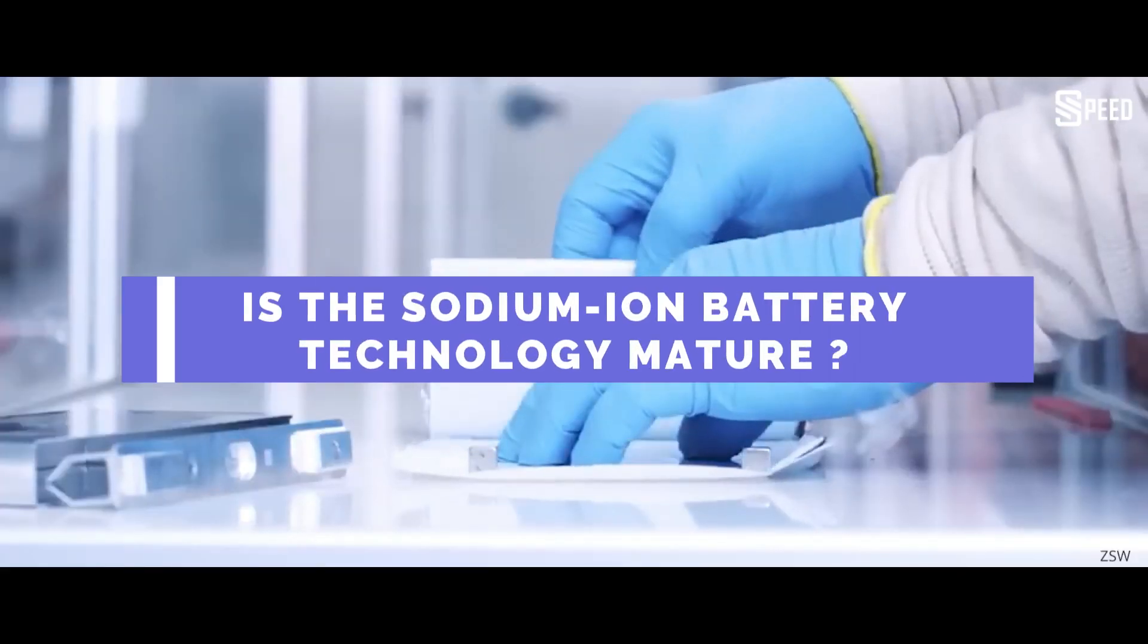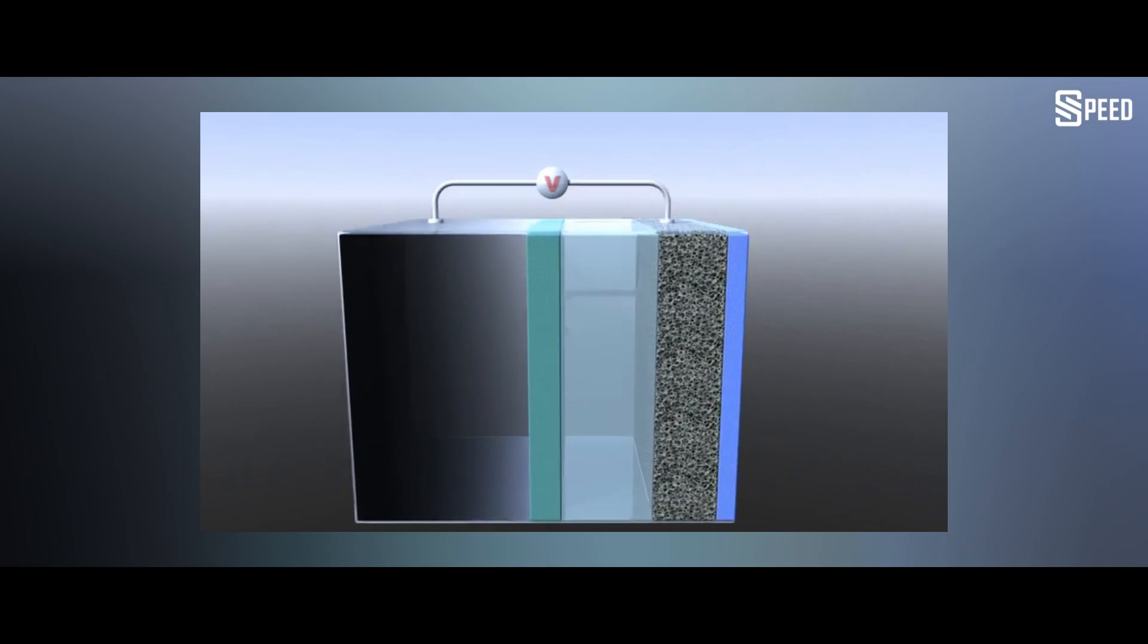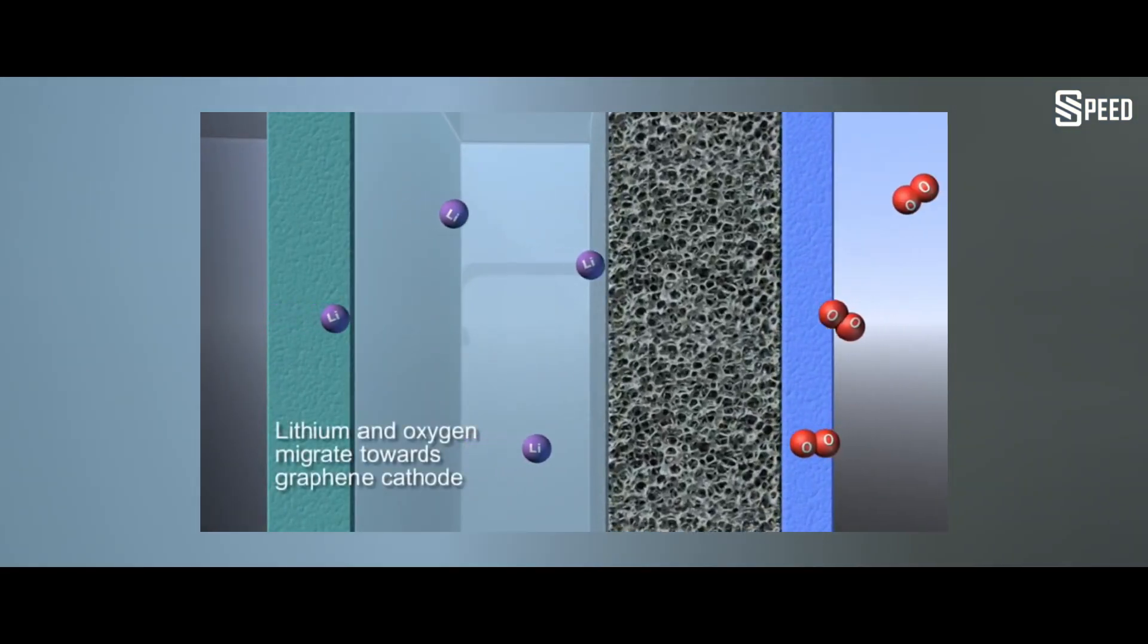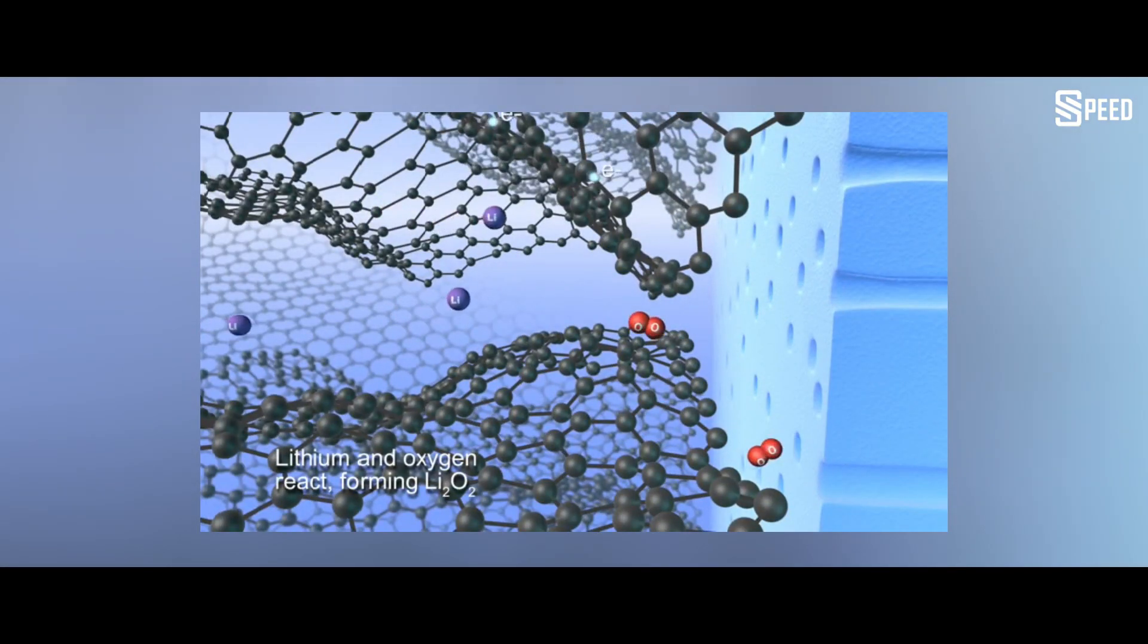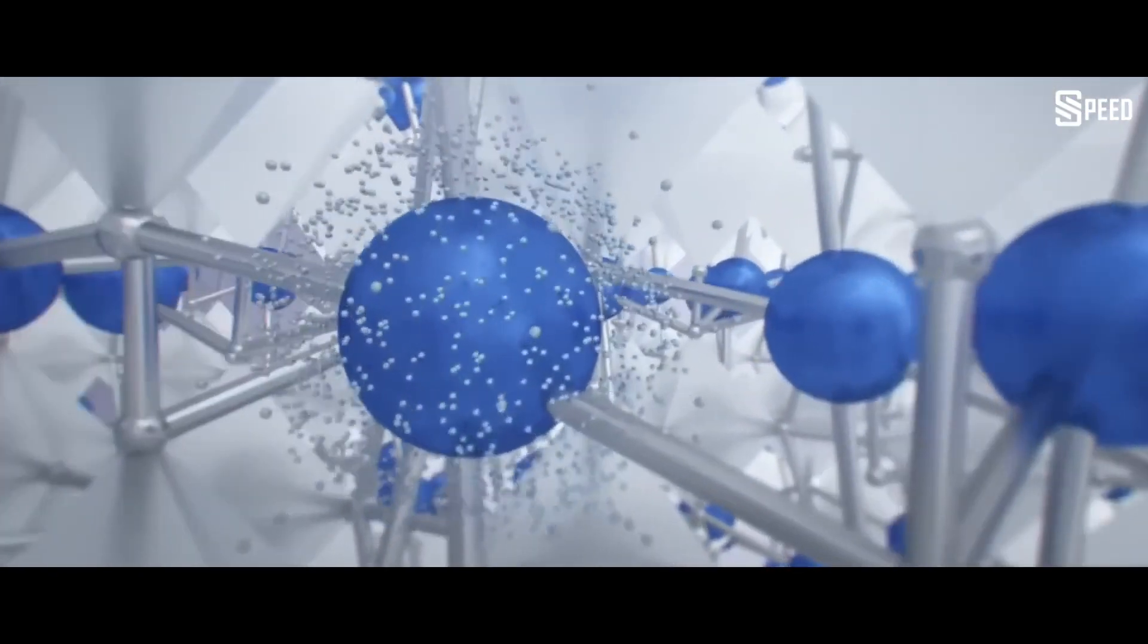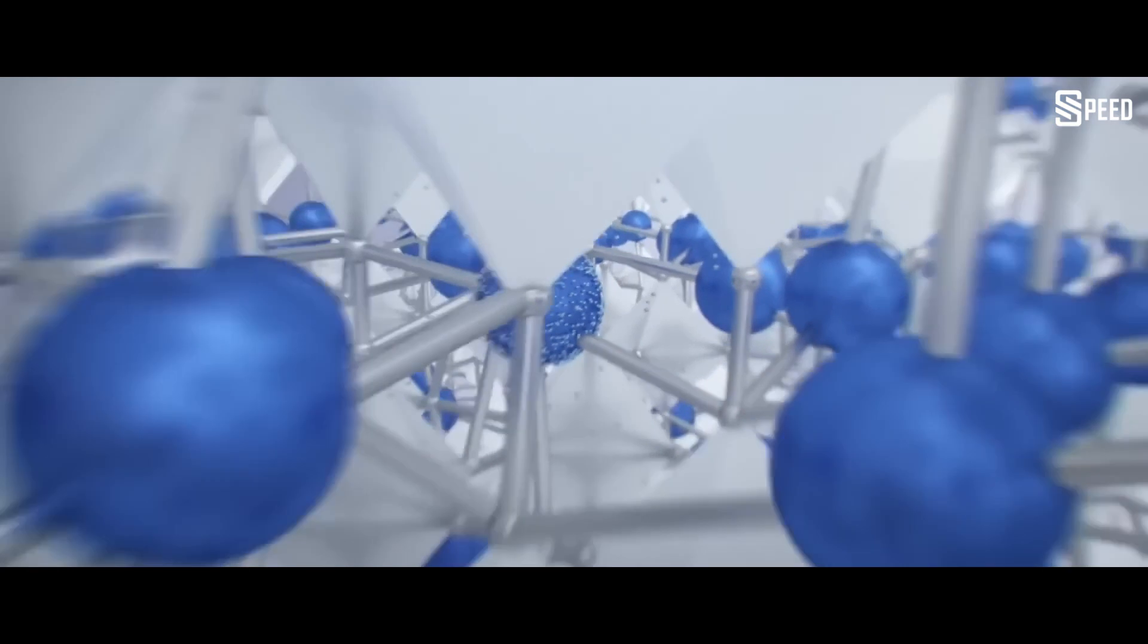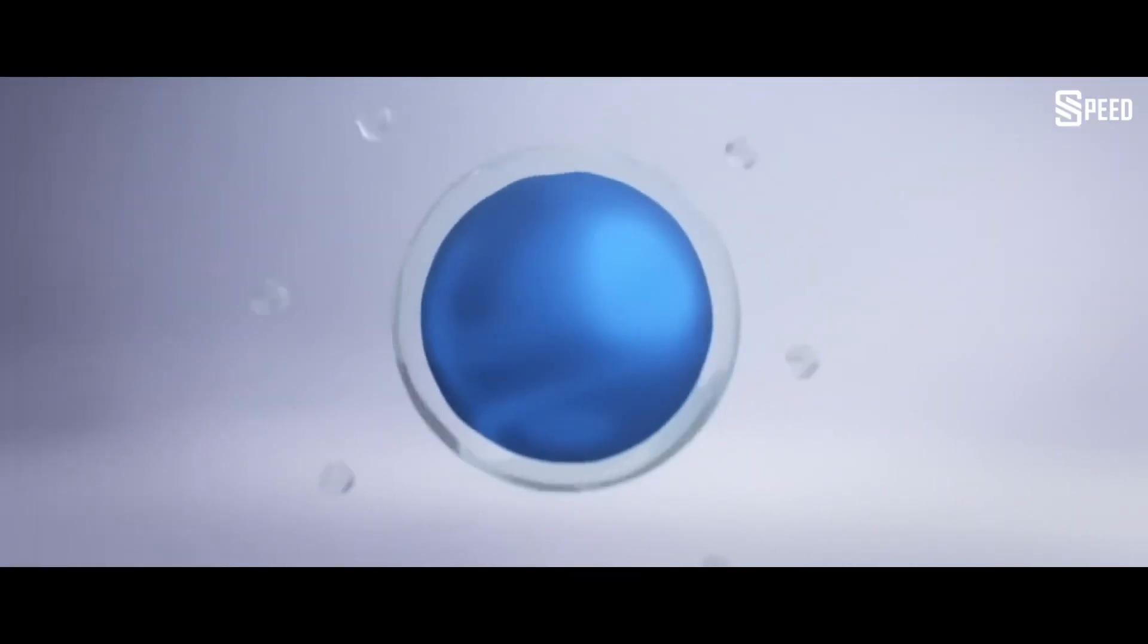Is the sodium-ion battery technology mature? It is understood that sodium-ion batteries, like lithium batteries, are composed of a positive electrode, a negative electrode, an electrolyte, and a diaphragm. Compared with lithium ions, sodium ions are larger in size and have more stringent requirements in terms of material structure stability and kinetic properties. This is also the reason why sodium-ion batteries have been difficult to commercialize.